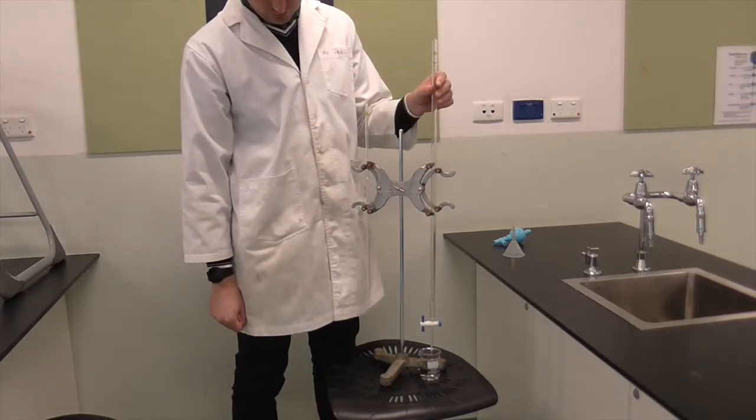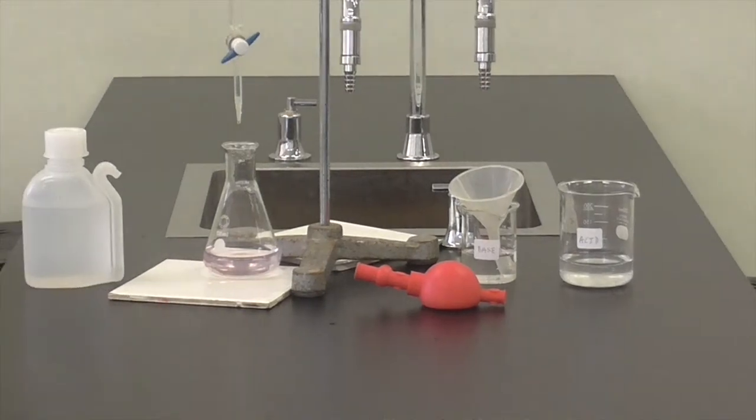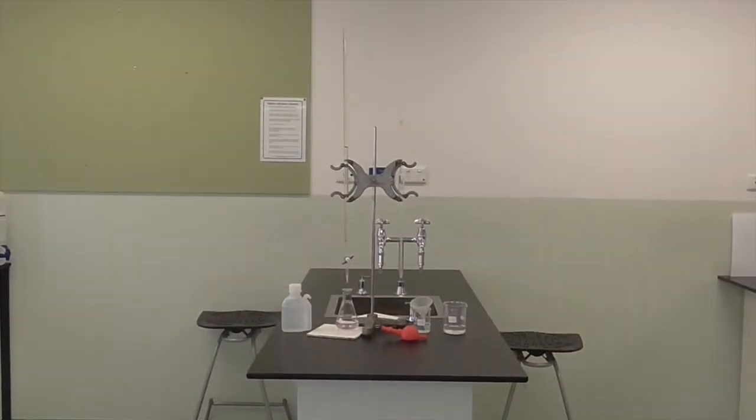Now let's get started on the titration. This is the equipment we're going to use to do our titration. Beakers of acid and base, a funnel, a pipette filler, conical flask, white tile, distilled water, a burette and a pipette in a stand.